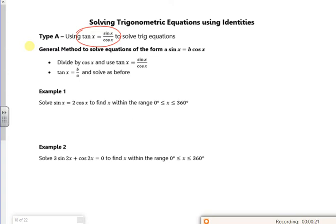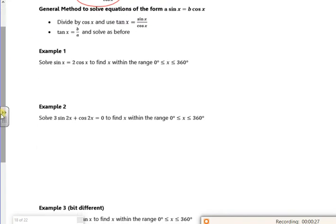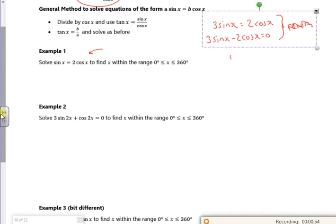So these three examples use tan x. So I want to make this into tan x. If you've got anything which might say like 3 sine x is equal to 2 cos x or 3 sine x minus 2 cos x is 0, these can be rearranged. It can be rearranged into tan x.